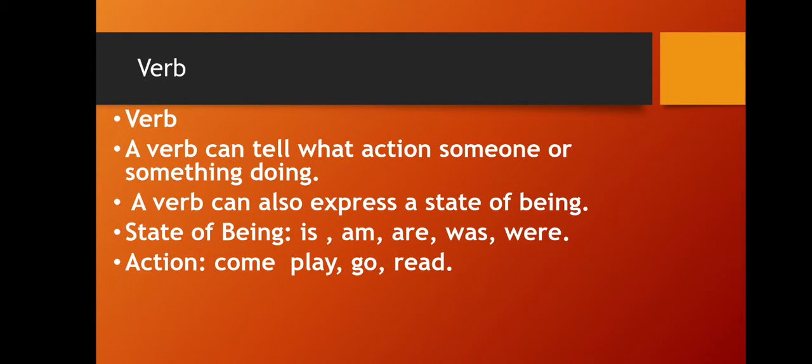Verb can tell what action someone or something is doing. Verb is of two types: state of being and action. State of being includes is, am, are, was, were. Action verbs include come, play, go, read - these show actions that can be demonstrated.